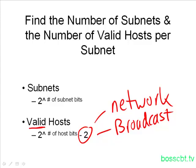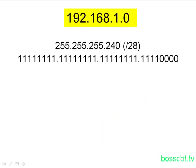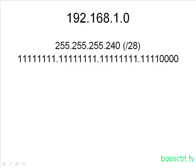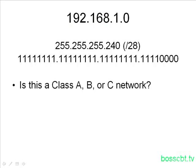Let's run through a few examples. We're going to look at this network number, 192.168.1.0, and we're going to subnet it by applying the subnet mask 255.255.255.240. That's a slash 28 in prefix notation, and we know that because if we look at this subnet mask in binary, we can see there are 28 one bits. So the first thing we want to ask ourselves is: is this a class A, B, or C network? The answer is it's a class C network, and we know that by looking at the first octet — 192 falls within the class C network range.